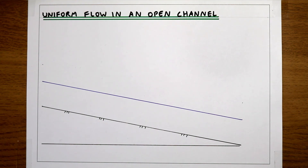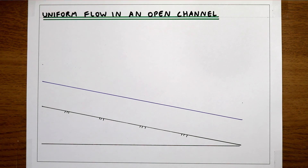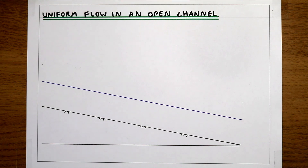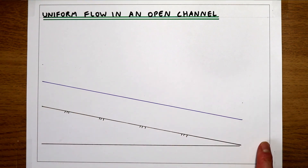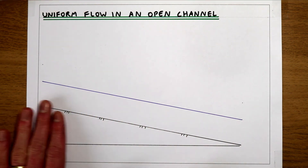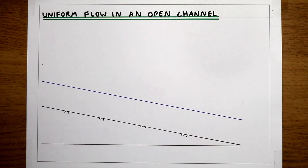In this video we're going to be looking at uniform flow in the context of open channel flow. A few videos back we looked at the general definition of uniform flow, which was that the flow parameters don't change spatially — so as we move along the flow in X, Y, or Z, our flow parameters aren't changing. In open channel flow, we're normally thinking about whether the flow parameters are changing longitudinally as we move from point one to point two.